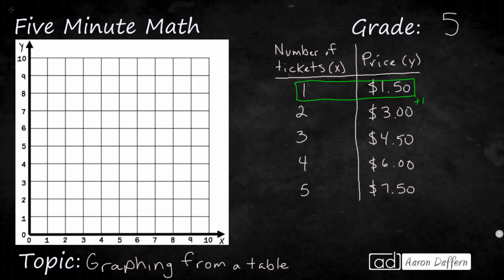We don't necessarily need to find what's the rule. What we need to do is find a way to graphically represent this information. We need to transfer this information from the table to the graph, which is a big piece of learning we do in fifth grade.